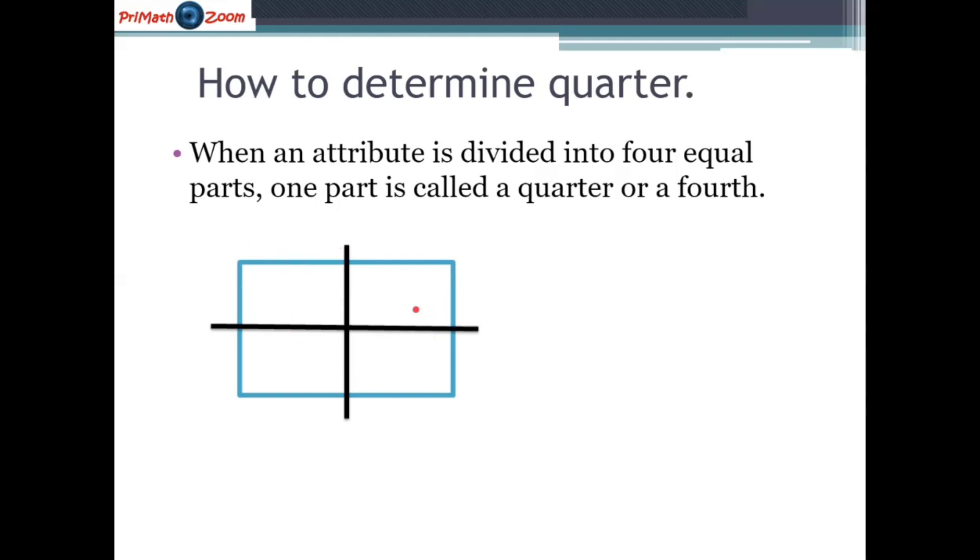So here in this attribute we would have one quarter, two quarters, three quarters, four quarters, which will be one whole.